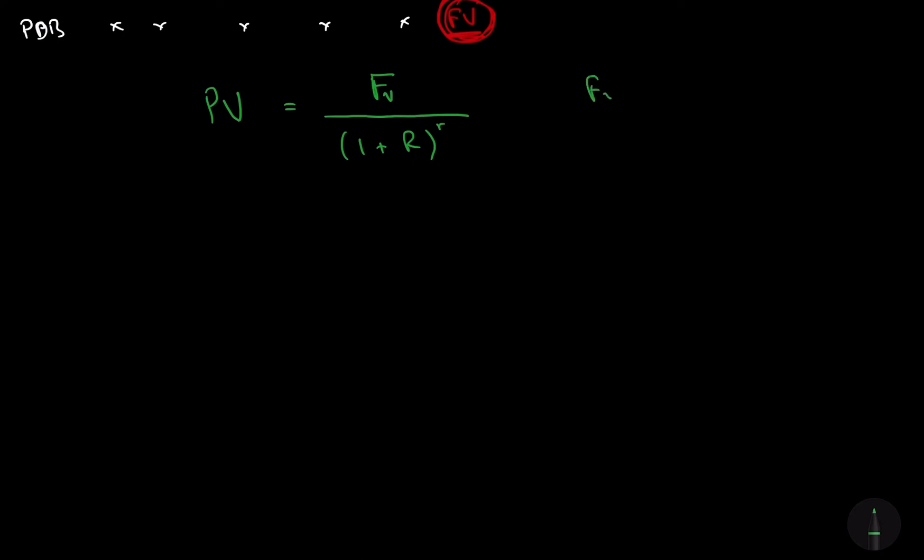So I'll just write this down here, FV being the face value, R being the interest rate, and little r being time period.